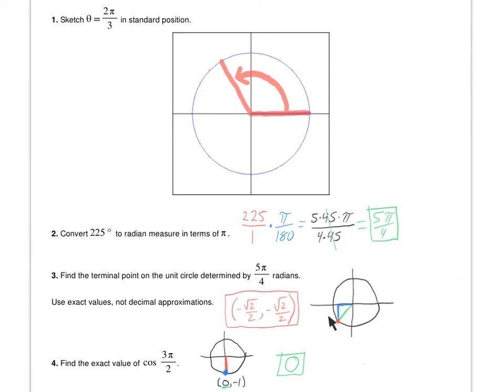Now from there, I want to find my coordinate. My coordinate is over and down the same amount, because that's a 45-45-90 triangle. And it would be over, negative square root 2 over 2, and down, negative square root 2 over 2. Remember, this quadrant's always negative.